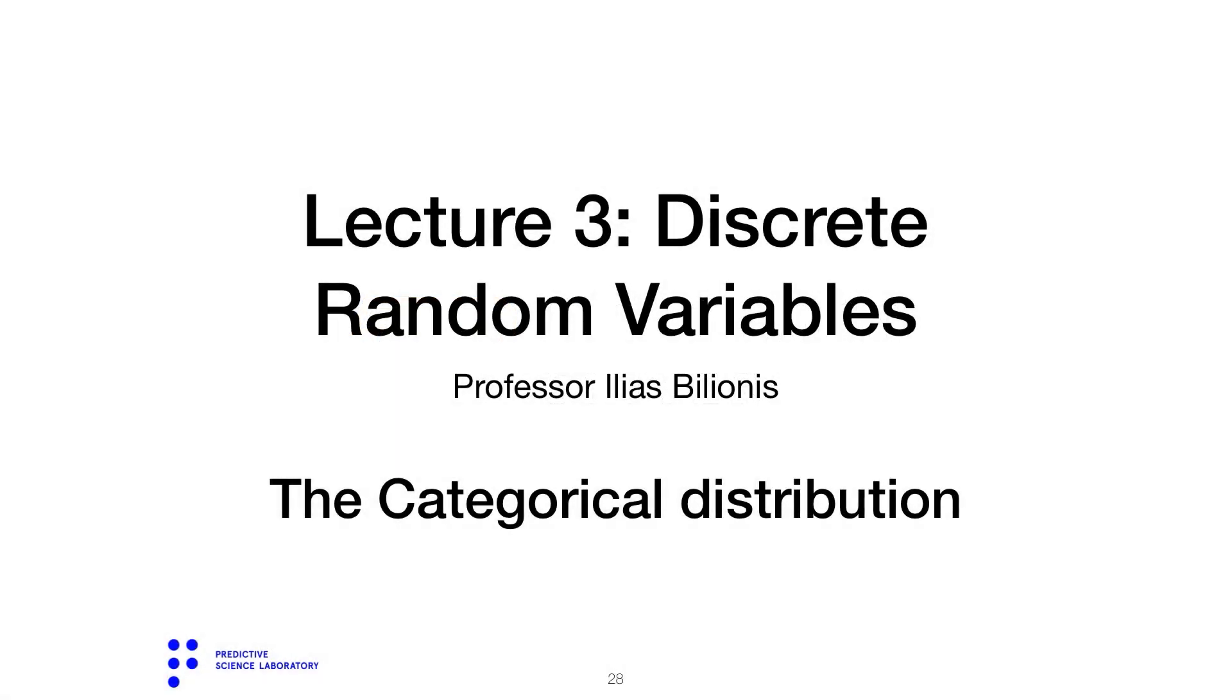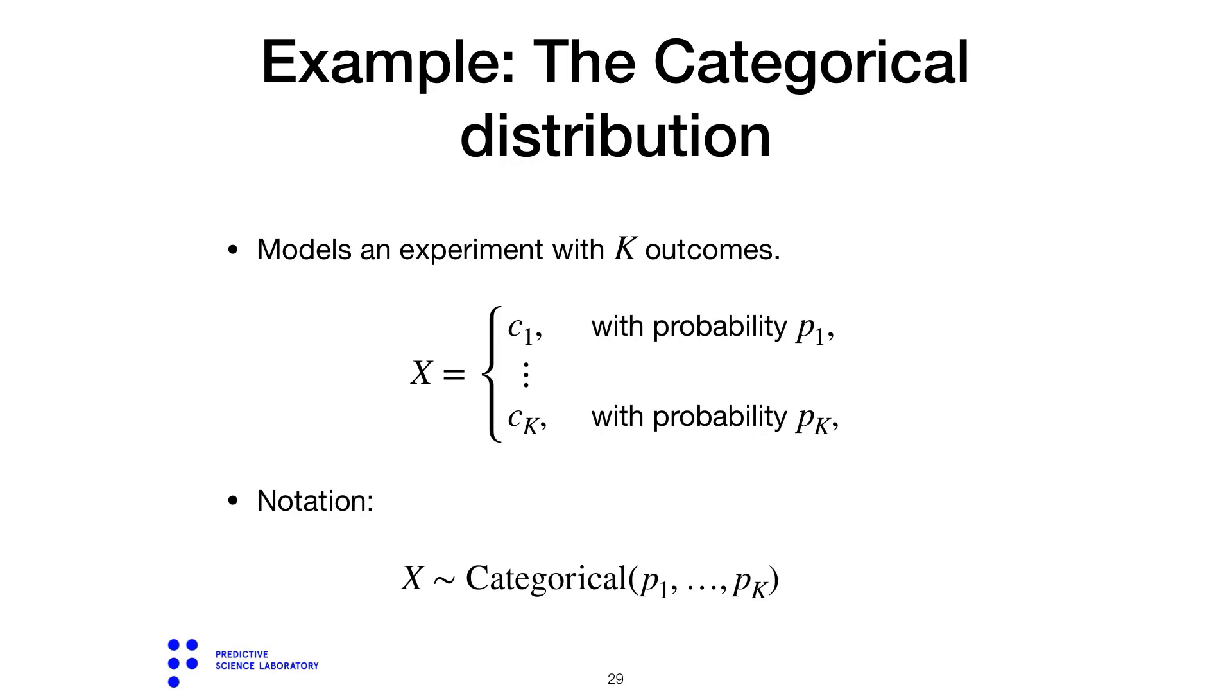A very common discrete random variable is a categorical random variable. The categorical random variable models an experiment with K possible outcomes which are labeled here c1 to cK, but you could really be using any kind of label you want.